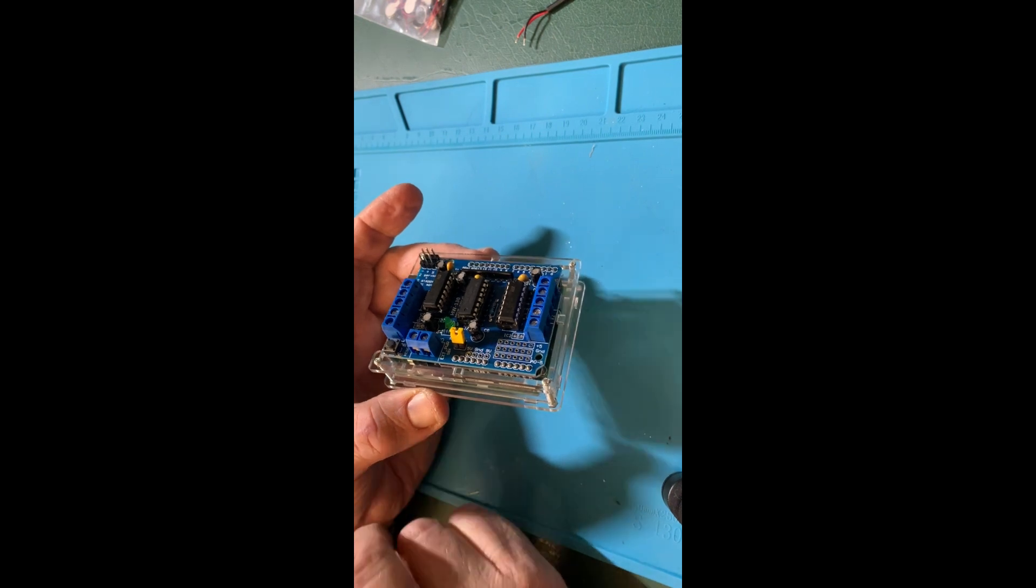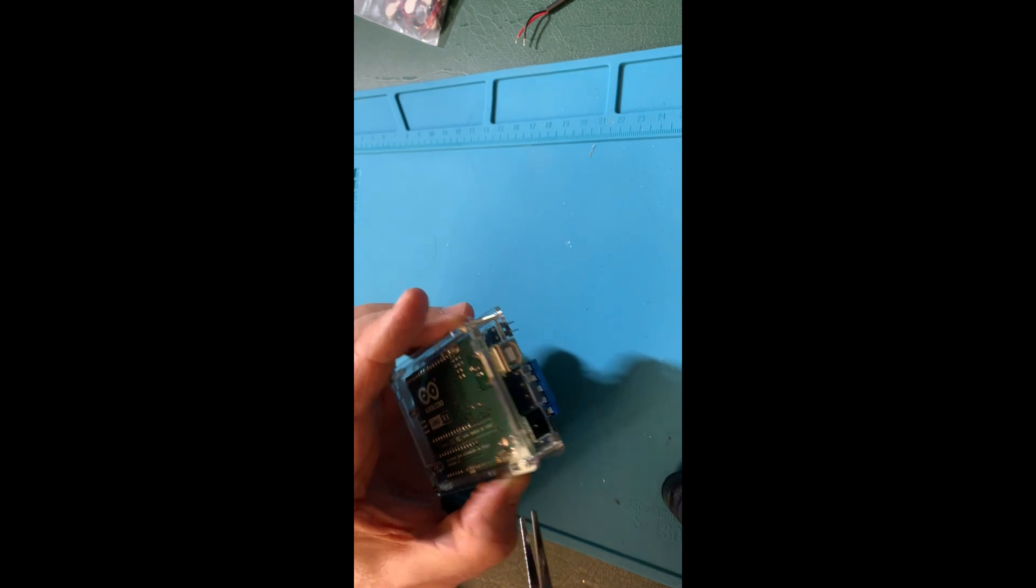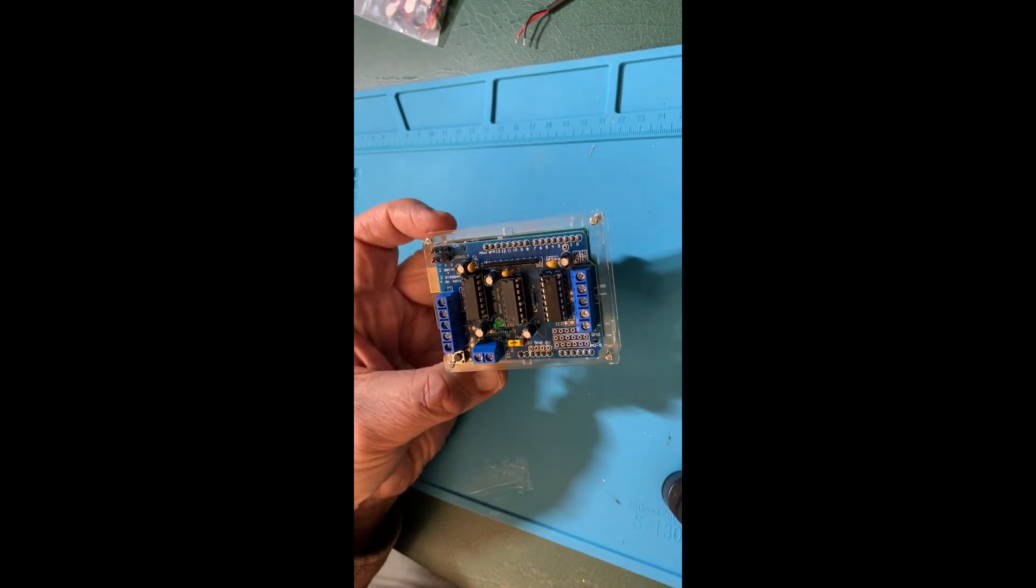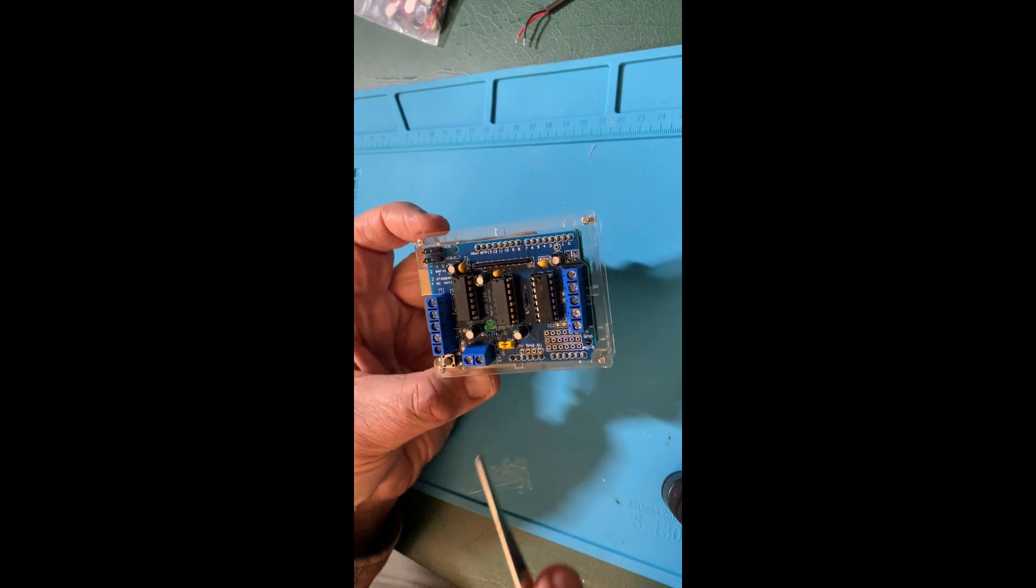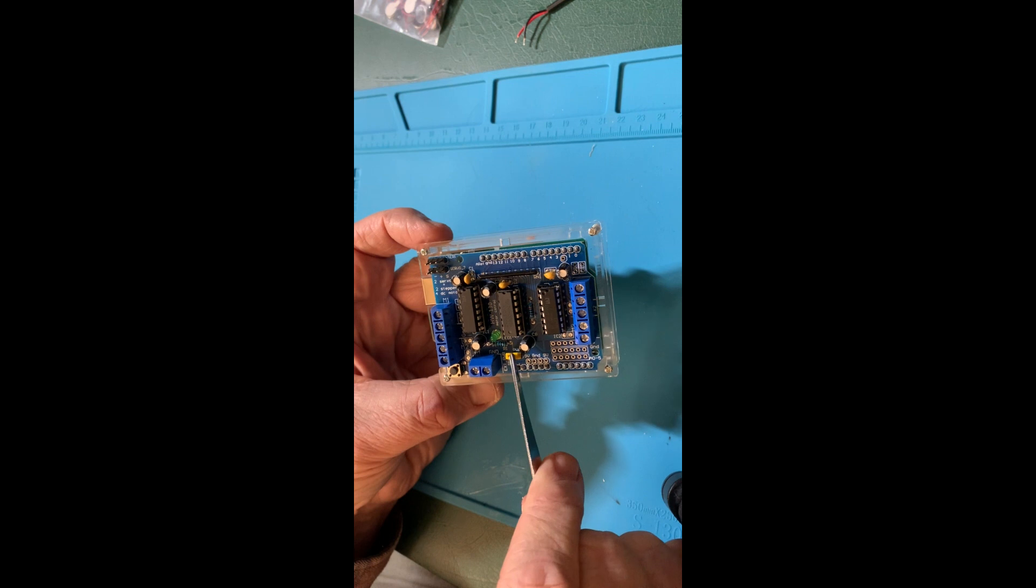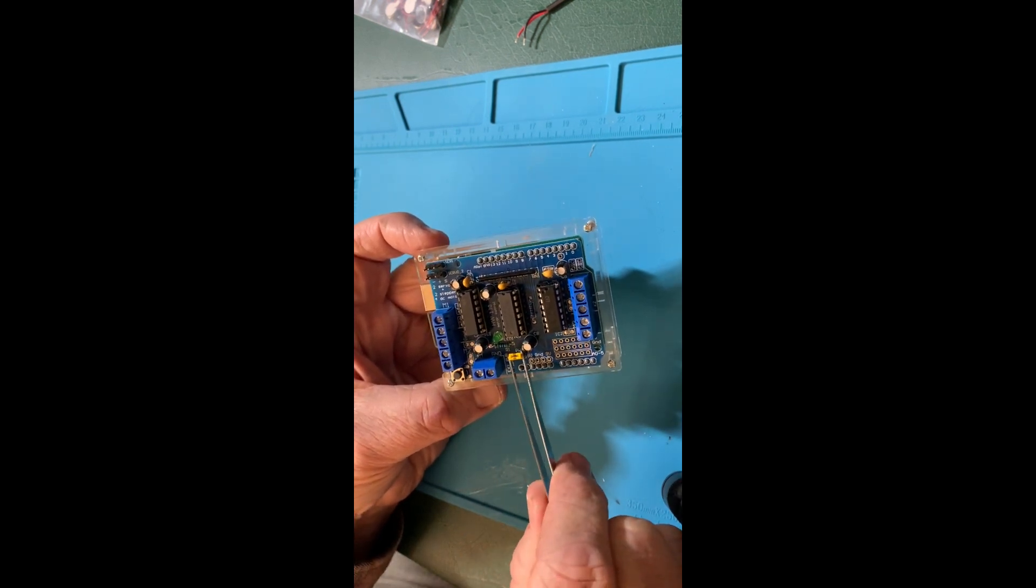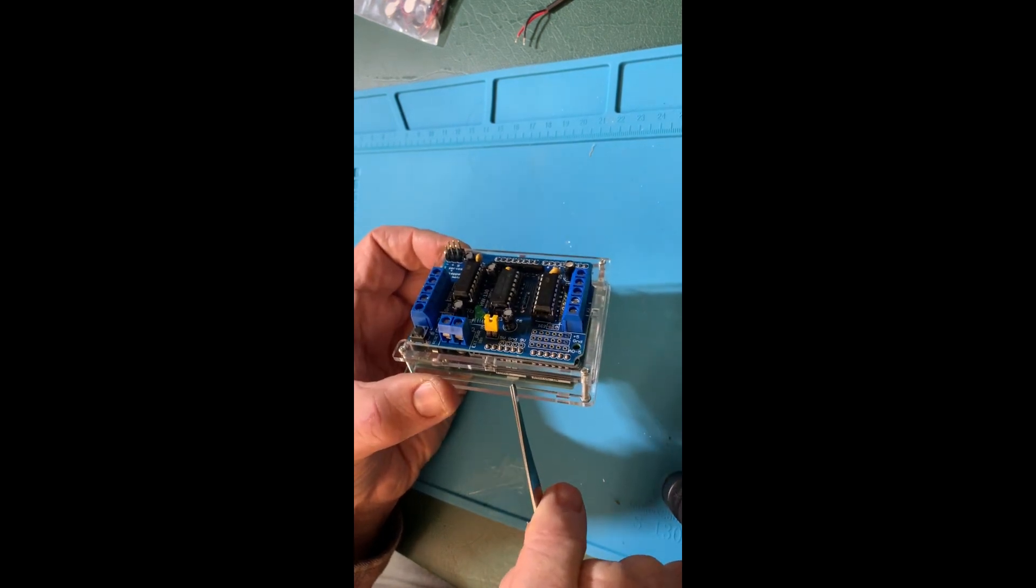Now, two notes. One, the nuts on this thing are quite small. The good Lord didn't build my hands for microelectronics, so I use tweezers to put the nuts on. There is a jumper right here. This jumper allows this motor shield to pull power from the Arduino directly.